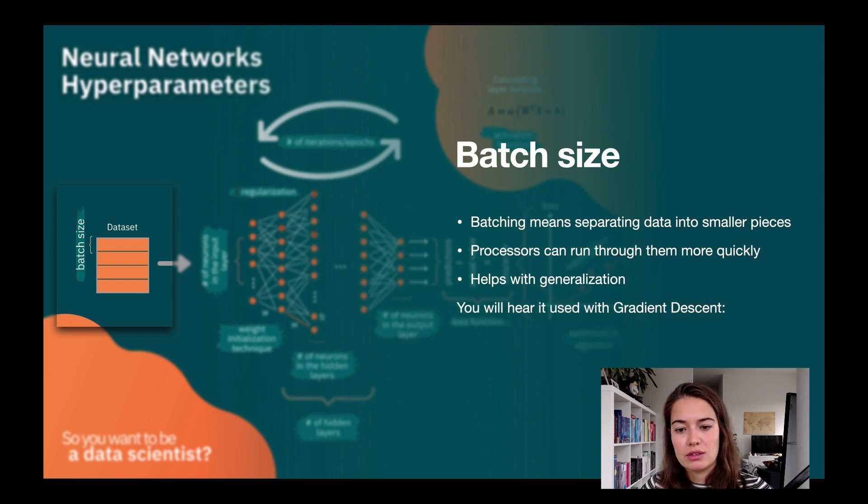Batching kind of goes with gradient descent. So don't be surprised if all over the place you hear something gradient descent, something gradient descent—like batch gradient descent, mini-batch gradient descent, and stochastic gradient descent.